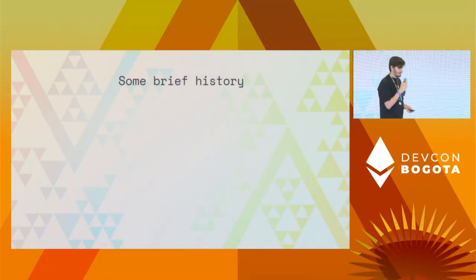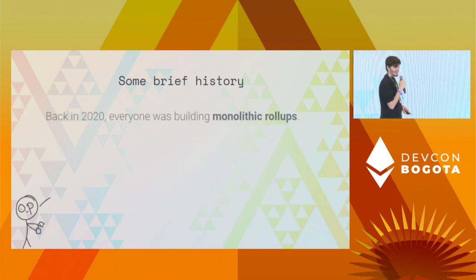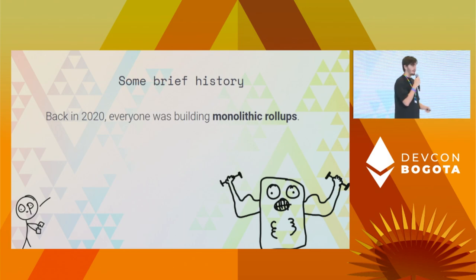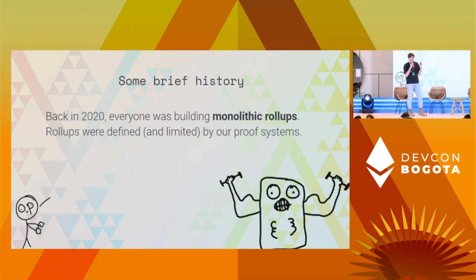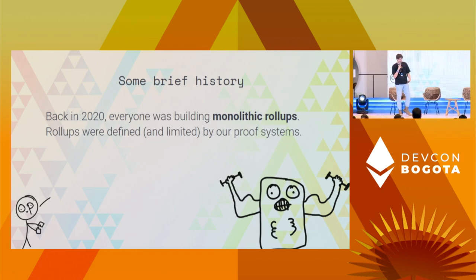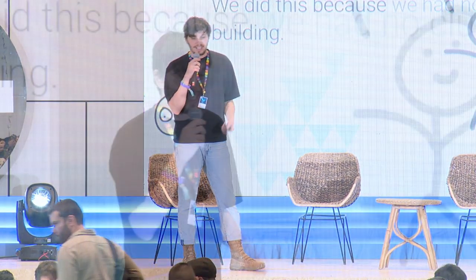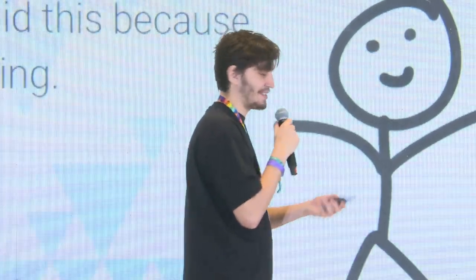Modular roll-ups 101. Brief history: back in 2020, everyone was building monolithic roll-ups — one giant codebase where it was really hard to understand where the separations were and what data availability meant. Everything was defined and limited by our proof systems. For an optimistic roll-up, we had to build the fault-proof, and then figure out how to make the system work — like the EVM — inside of a functioning fault-proof. We did that because we had no clue what we were actually doing. We had no clue what roll-ups really were.